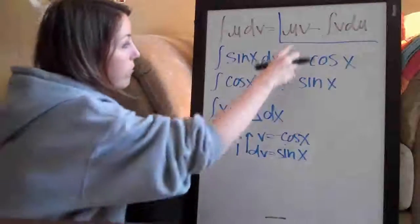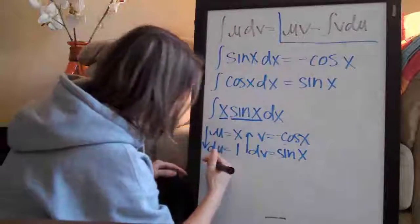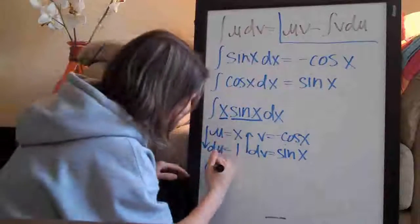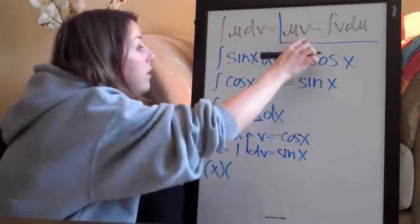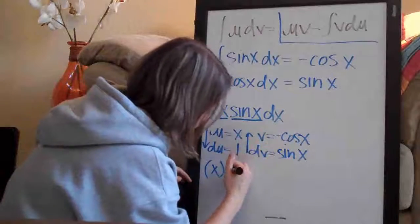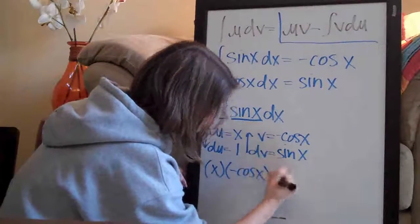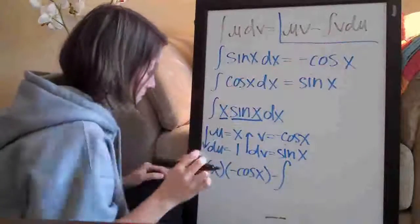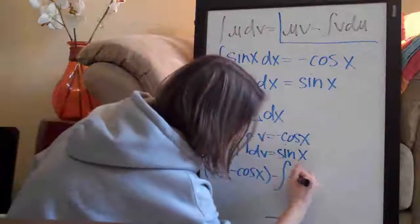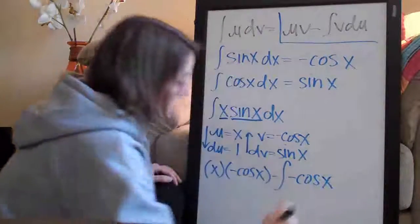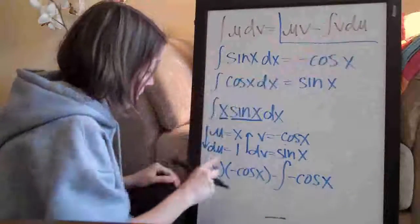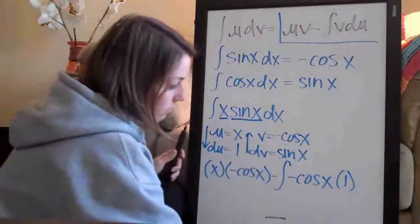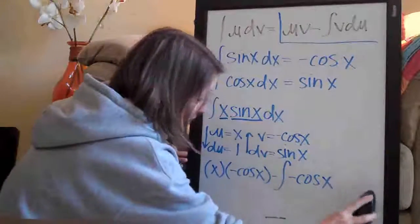Let's go term by term here. The first thing we want to do is plug in u and I will write parentheses around everything so it's really clear. The first thing, u, which is x here. So, x times v, which is negative cosine of x. Negative cosine of x. And then, we have minus the integral, minus the integral of v, which we have here. Negative cosine of x. And then, du, which is one. So, we don't need to write that. I mean, it would be times one but that doesn't make any difference. It just leaves us with negative cosine of x. So, we can actually leave that out.